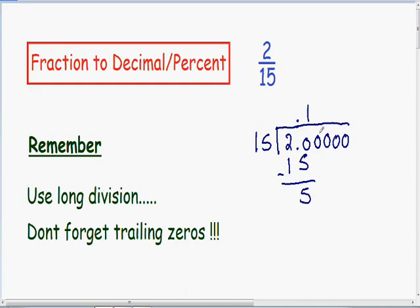So we need to keep on going. Now I'm going to bring down my zero. 15 goes into 50 three times. 3 times 15 is 45. 50 minus 45 is 5.